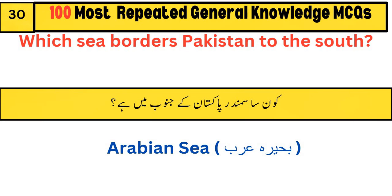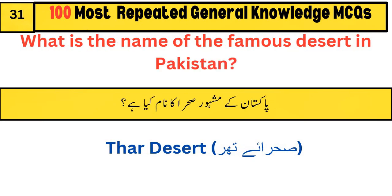Which sea borders Pakistan to the south? Arabian Sea. What is the name of the famous desert in Pakistan? Thar Desert.